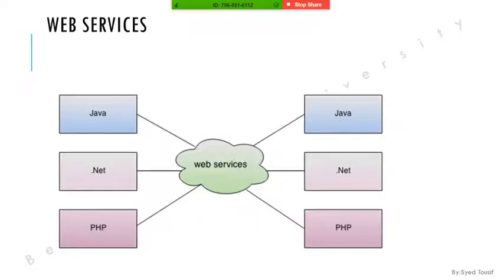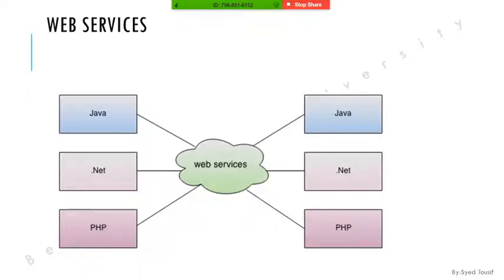Cloud computing is nothing but web services — the provider provides many web services at one server, and any number of clients can access them. There will be some conceptual limitations and boundaries to differentiate each user, but all of cloud computing is implemented using web services. Web service is a technology to communicate one programming language with another — for example Java with PHP or .NET. This is called interoperability — communicating without knowing the other's architecture.